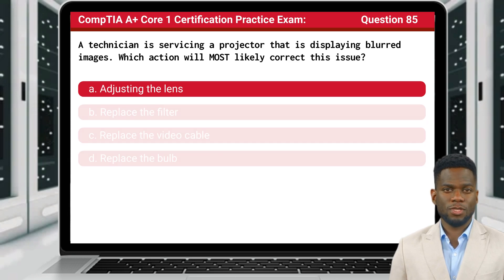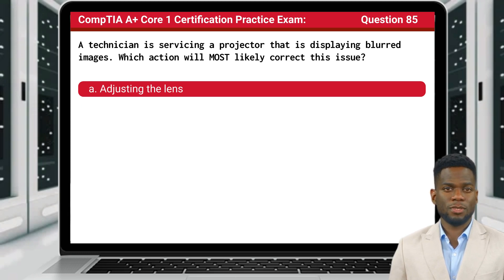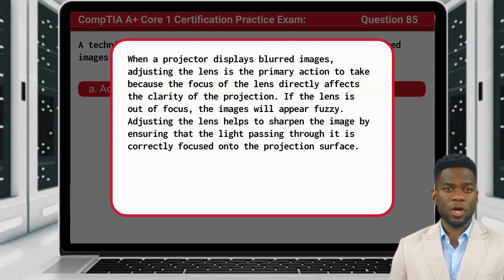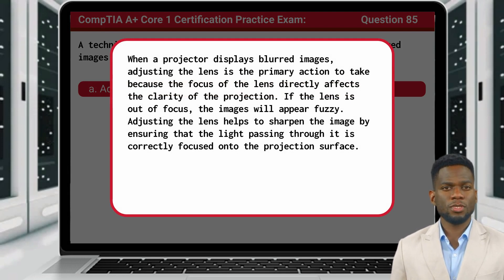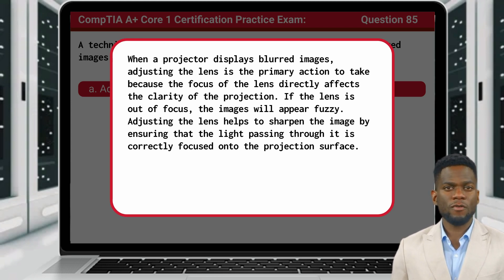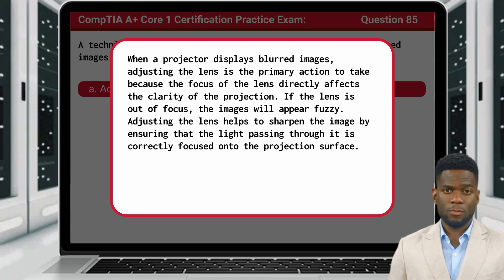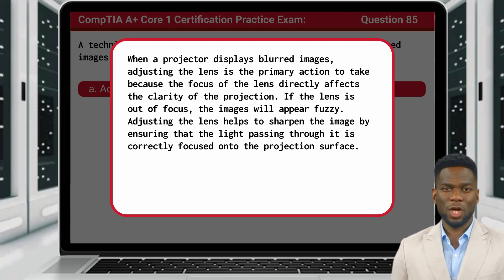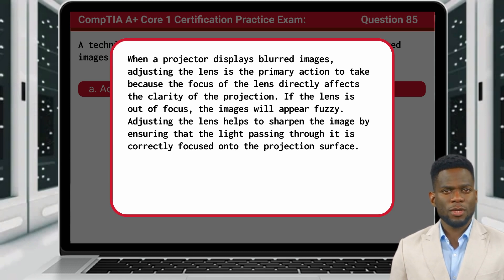The answer is A, adjusting the lens. When a projector displays blurred images, adjusting the lens is the primary action to take because the focus of the lens directly affects the clarity of the projection. If the lens is out of focus, the images will appear fuzzy. Adjusting the lens helps to sharpen the image by ensuring that the light passing through it is correctly focused onto the projection surface.